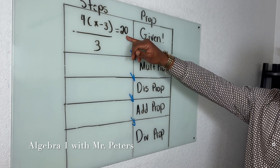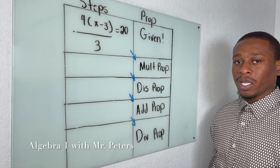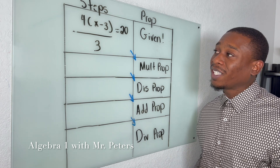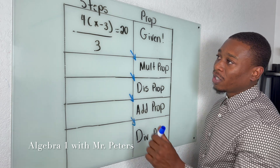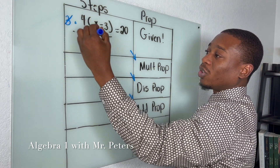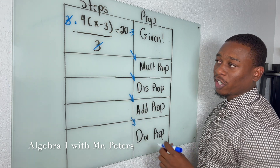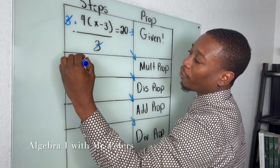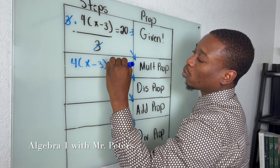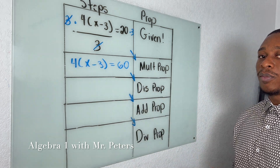They said that in this first step we're going to use the multiplication property. I love this problem because students typically get this wrong. Just remember that we're going to get rid of this fraction by using the multiplication property — that's how we get rid of fractions. So we would have four times (x minus three) is equal to 60. Use the multiplication property.